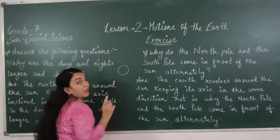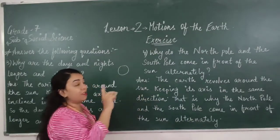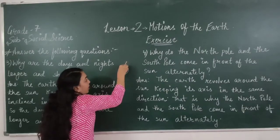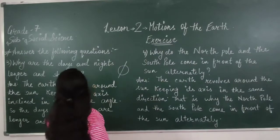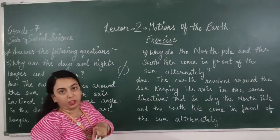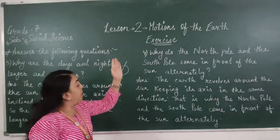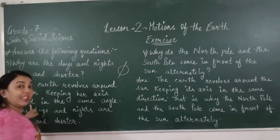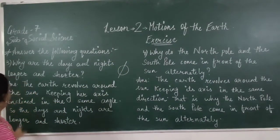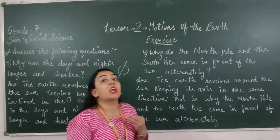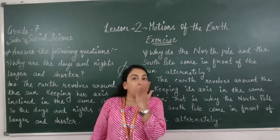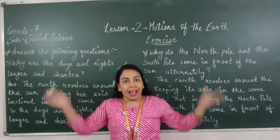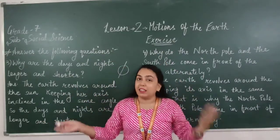As I have explained in the lesson, the earth is revolving around the sun and rotating on its axis. The earth has an axis which is tilted and inclined. This inclination does not change. And because the axis remains inclined in the same direction, some areas experience a difference between the length of night and day.